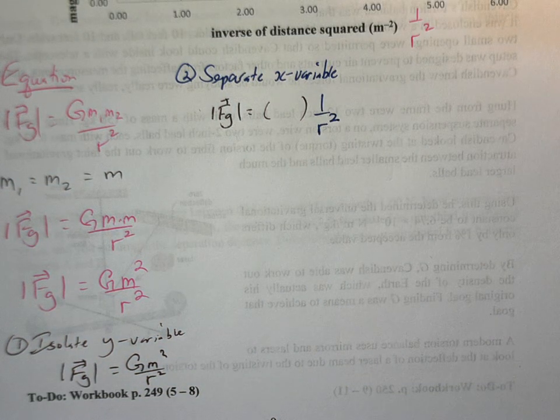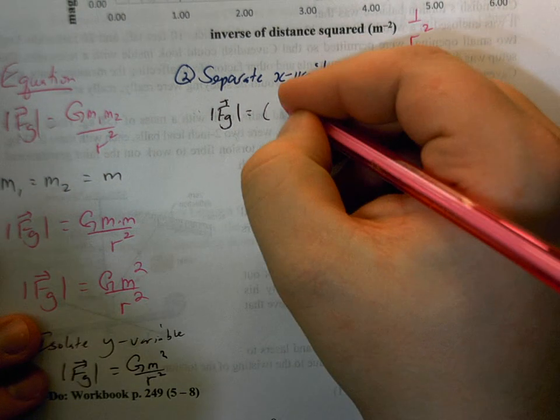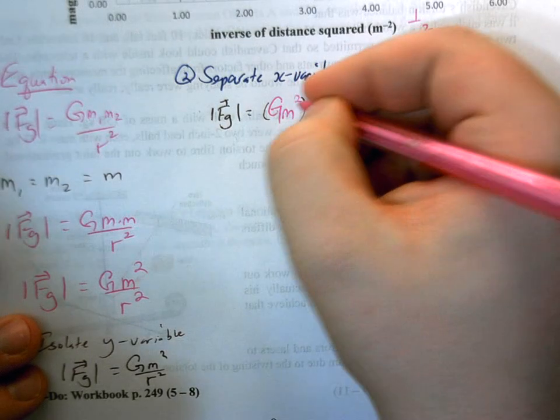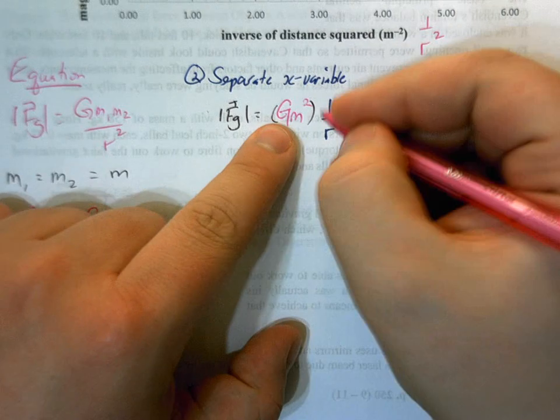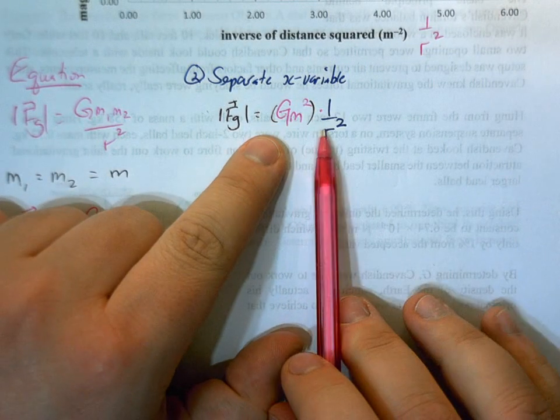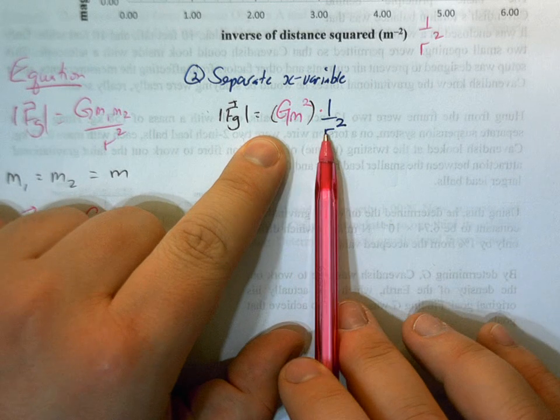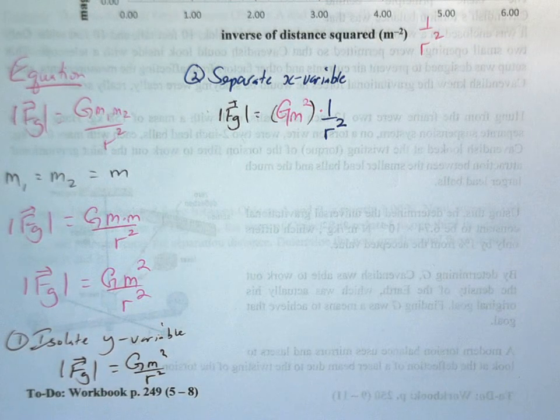What's left, if I take that one over r squared out, it's going to be this GM squared. GM squared multiplied by one over r squared is the same as GM squared over r squared. This is the two pieces separated.